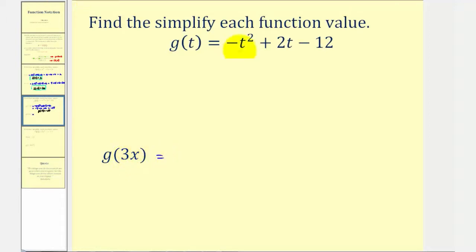We're going to substitute 3x for t, so we'll have negative and then 3x squared plus 2 times 3x minus 12.